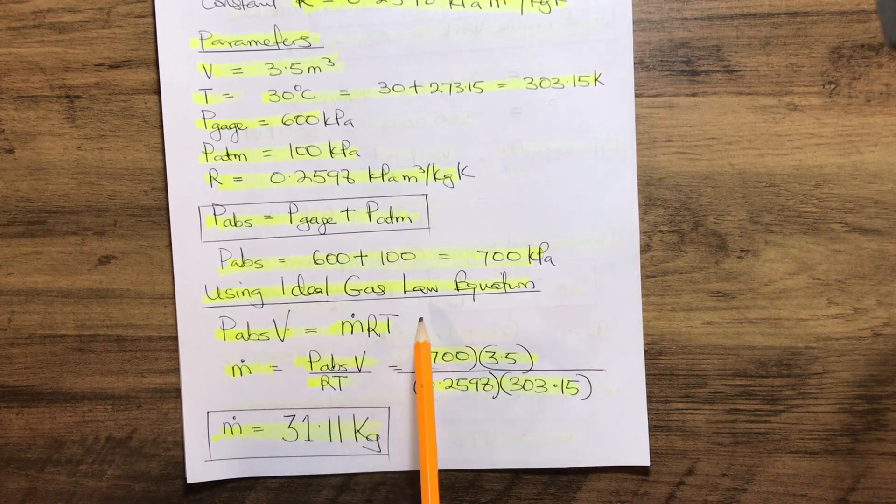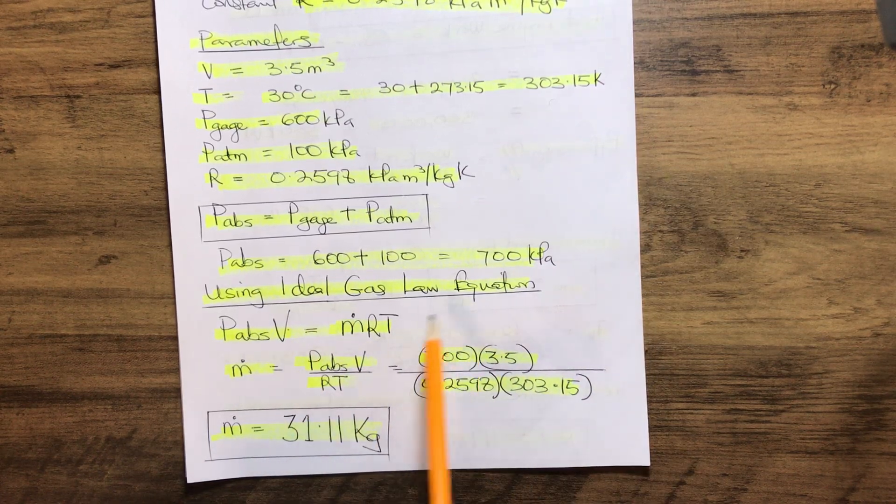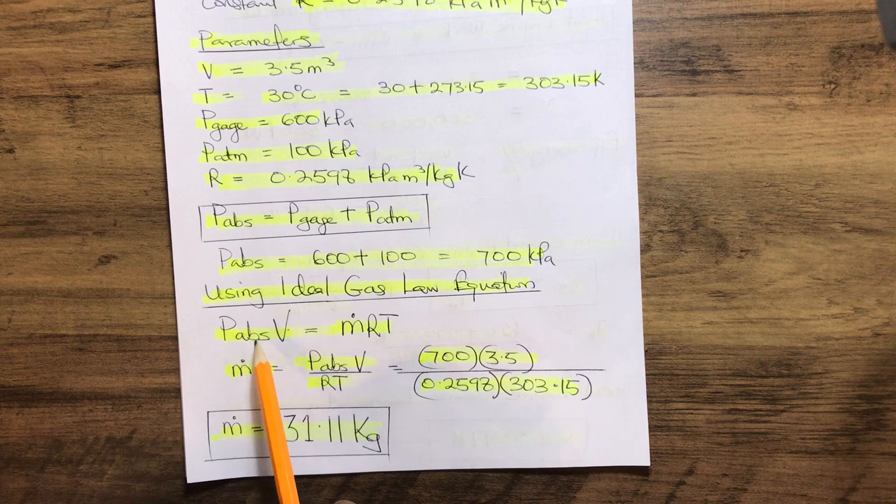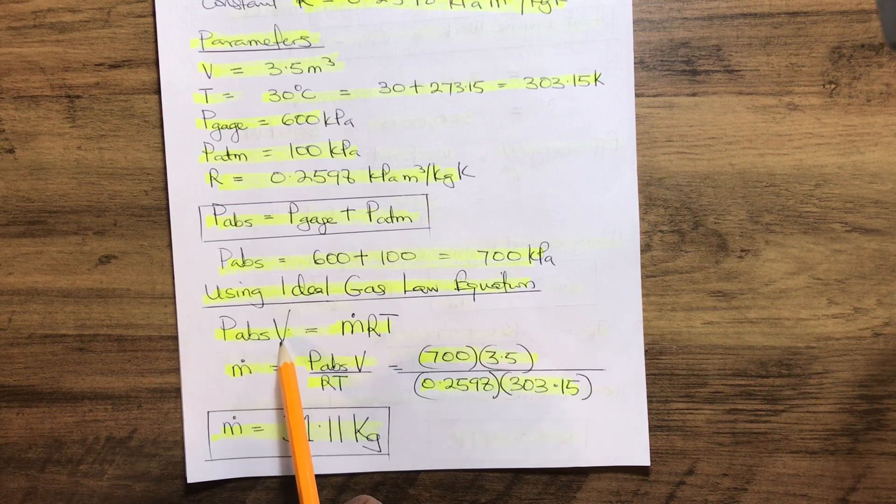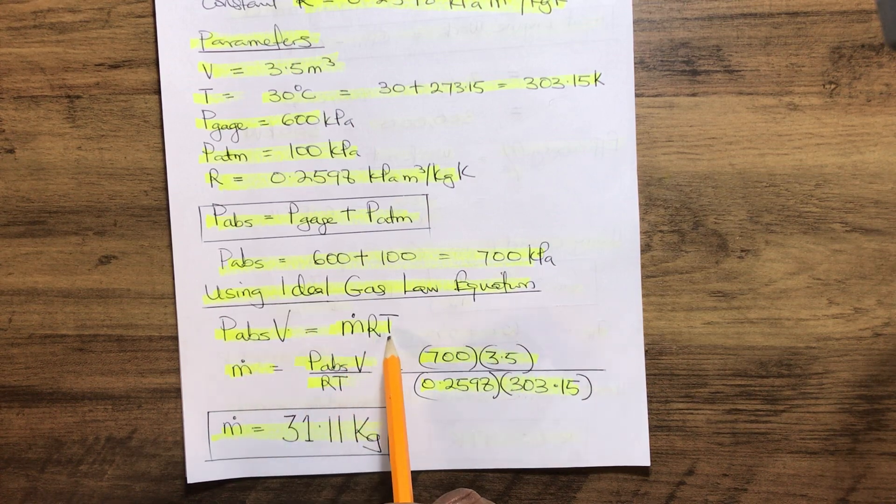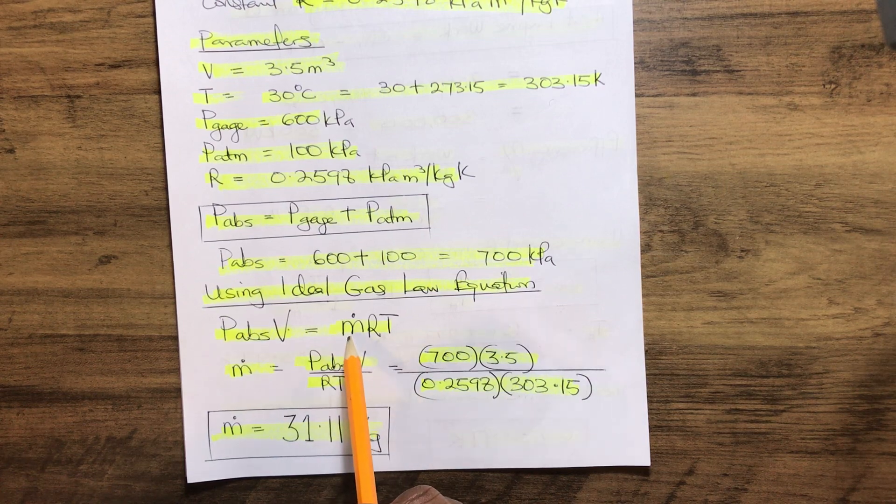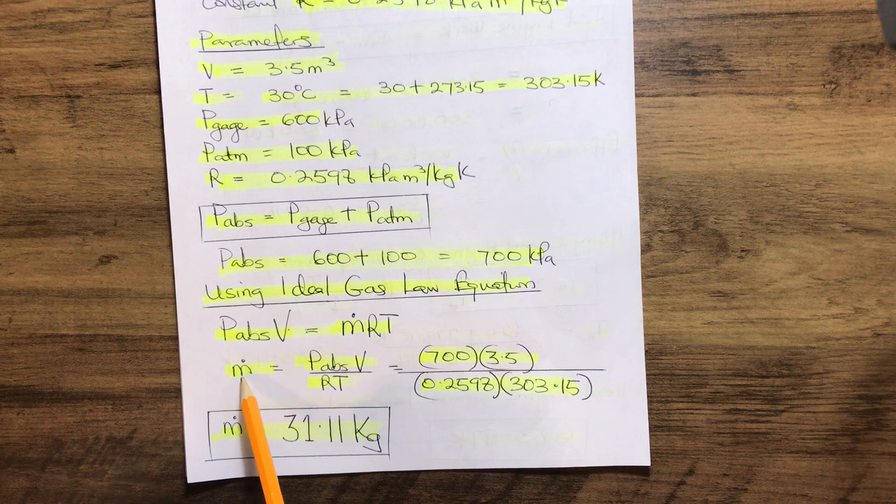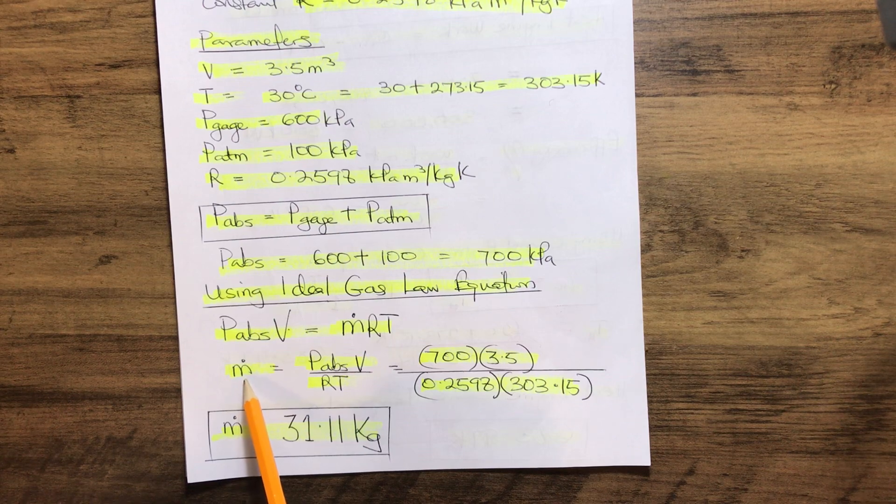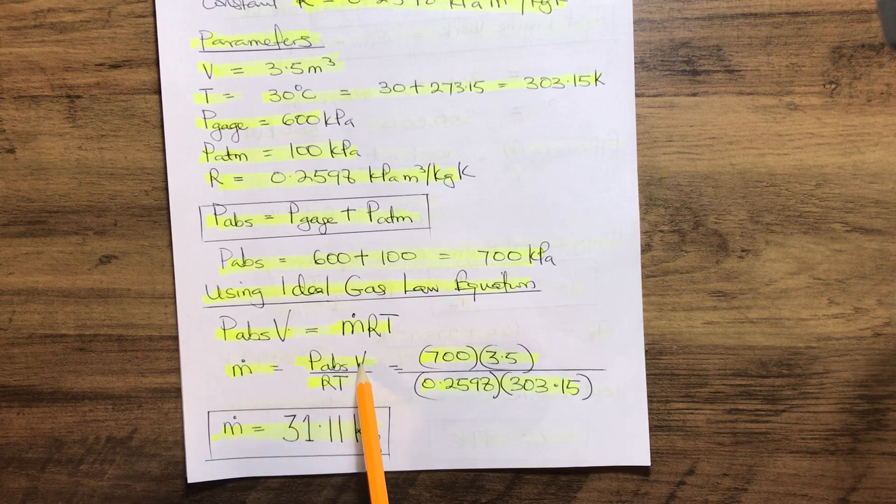By using the ideal gas law equation, P_abs × V = mRT. From there we can deduce and find m, the mass of oxygen, to be m = (P_abs × V)/(RT).